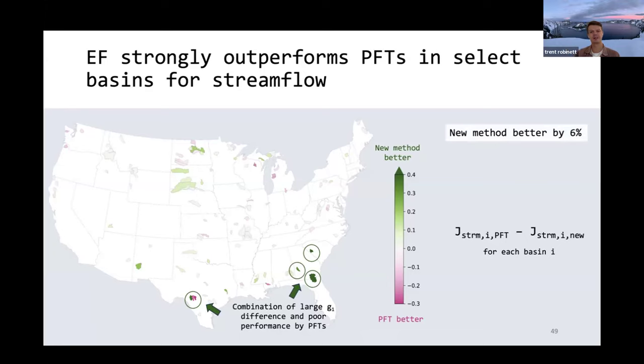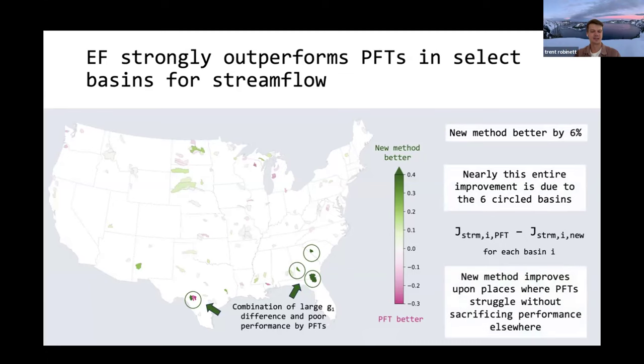When we look across the whole continental US, we see that this new method improves upon plant functional types by about six percent. When we look closer, we end up seeing that nearly this entire six percent improvement is due to the improvement found in these six basins I've circled here. So the takeaway here, I would say, is that this new method, this predicting traits from the environment I've presented here, really improves upon places where PFTs struggle to get accurate stream flow. And it does that without necessarily sacrificing performance in other basins where plant functional types were already doing all right.